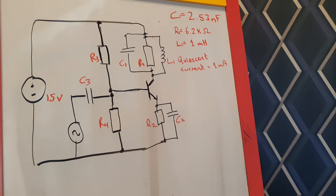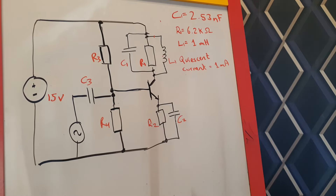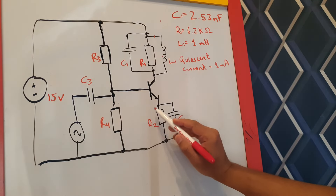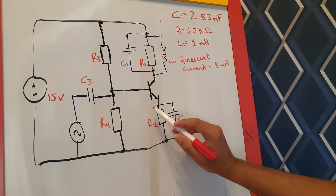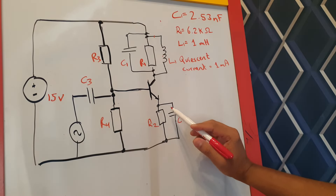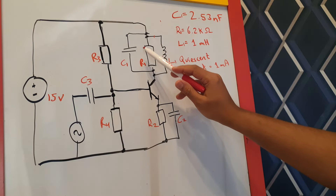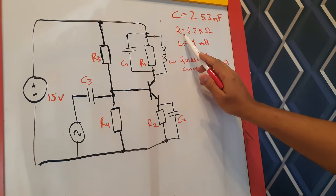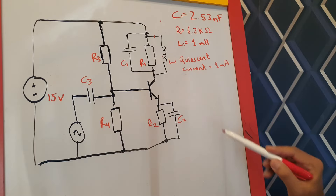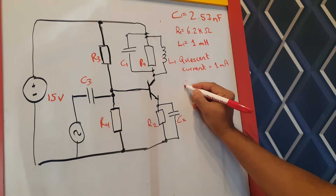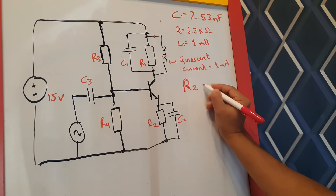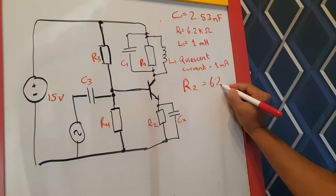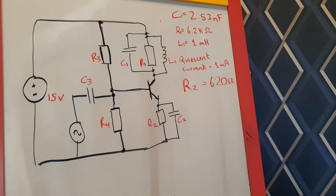To calculate R2, the book tells us the RE resistor should be roughly one tenth of R1. R1 is 6200 ohms, so we set R2 equal to 620 ohms.